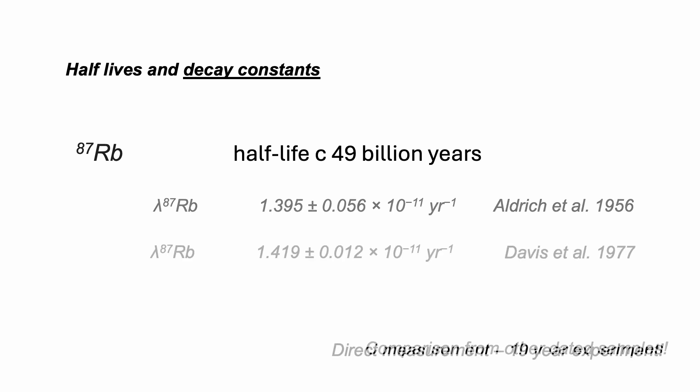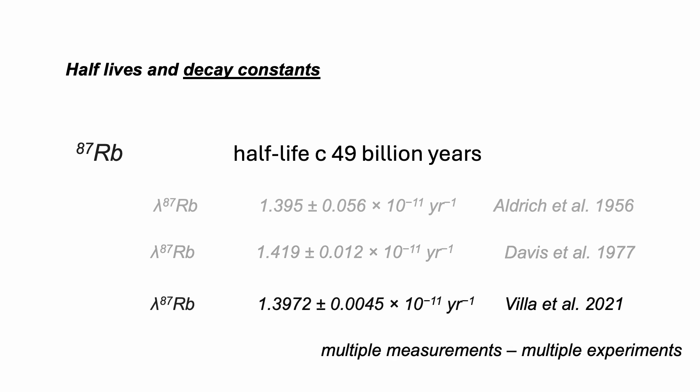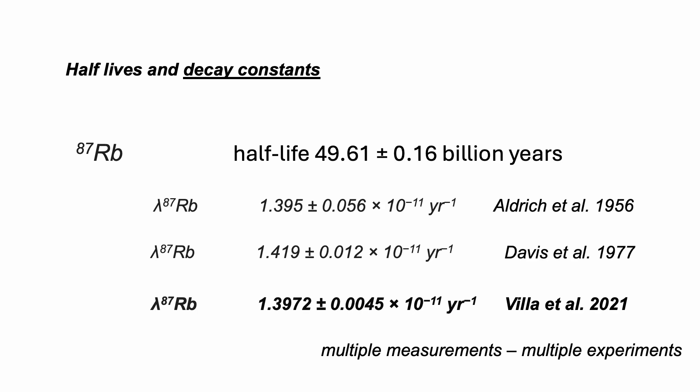This was determined by comparing analyses of samples whose age was defined by another isotope geochronometer. This value was calculated by actually counting the number of decay events for a known amount of 87 rubidium over a staggering 19-year experiment. And there have been other counting experiments. Nowadays, the decay constant is based on several experiments. The differences between these numbers is pretty small. The choice of decay constant might impact on the precision of the age you calculate, but not really its accuracy.